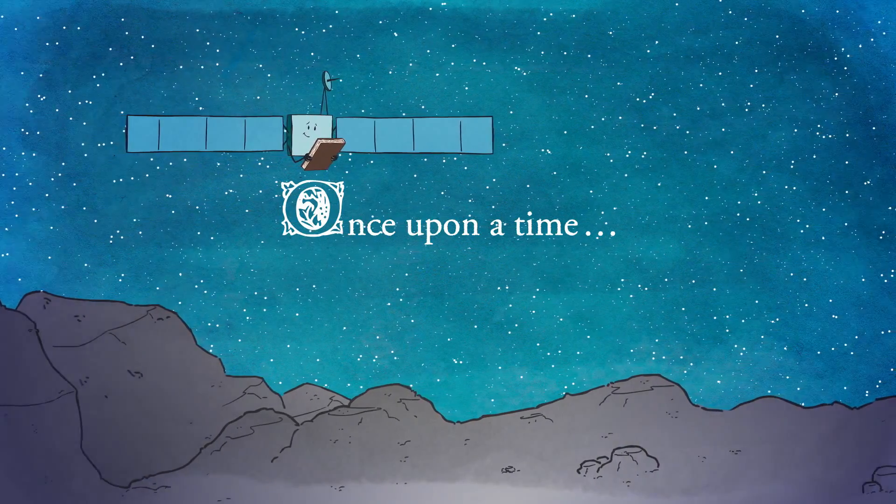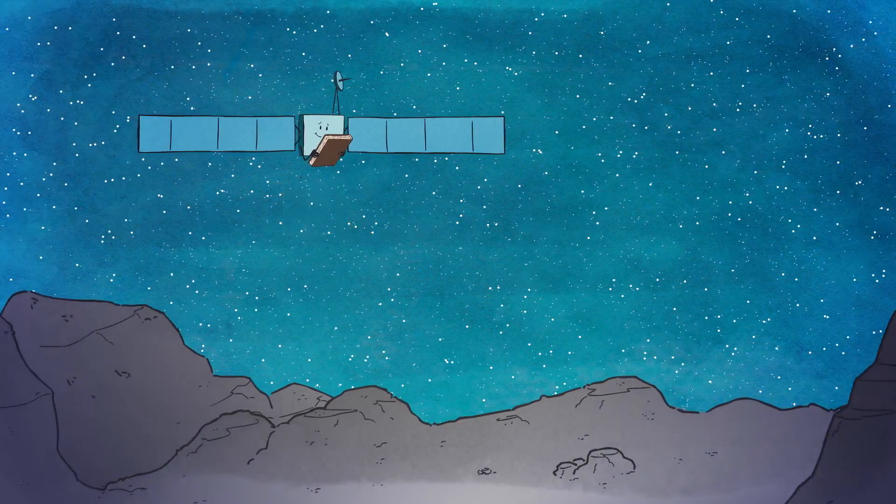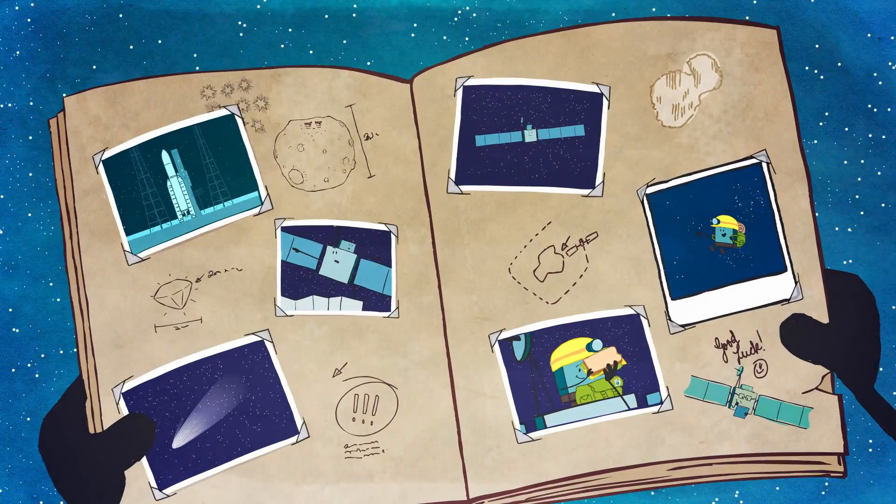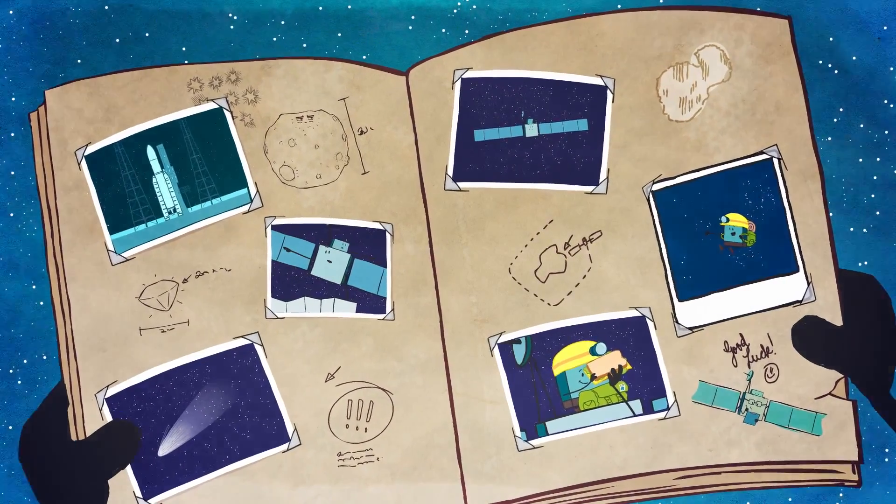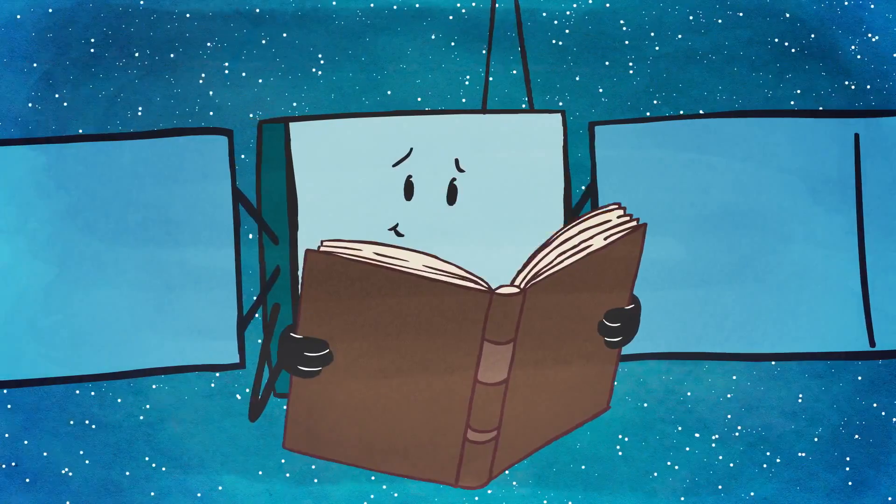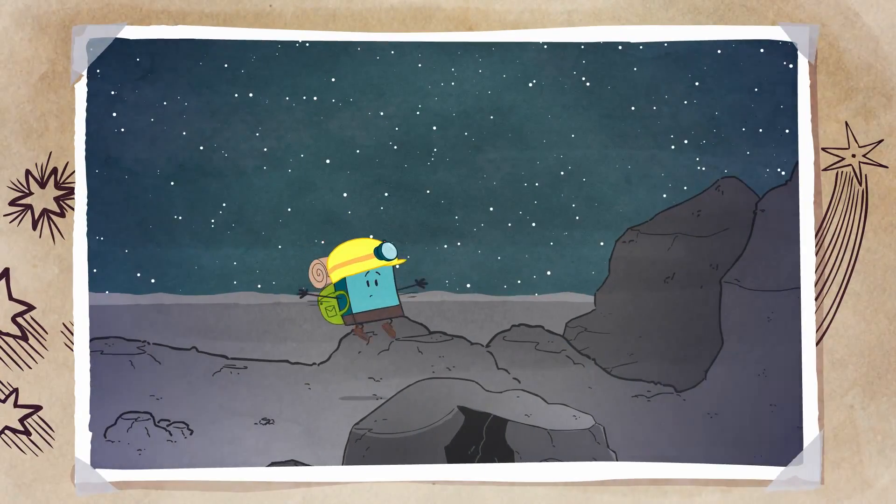A year had passed since Rosetta had arrived at her new home, Comet 67P Churyumov-Gerasimenko. It had been a busy time for Rosetta and for her lander Philae, who had been sent to the surface of the comet.